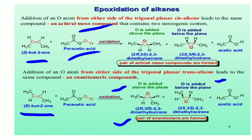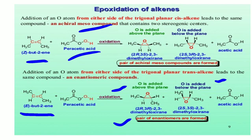Today we learned the Baeyer-Villiger reaction and the epoxidation of alkenes using the same oxidizing agent — peroxy acids. We use different types of peroxy acids: MCPBA (meta-chloroperoxybenzoic acid), peracetic acid, or H₂O₂. Using these peroxy acids, we convert aldehydes and ketones into esters or lactones, and alkenes into epoxides. Next time we will learn the hydroxylation of alkenes. Thank you.